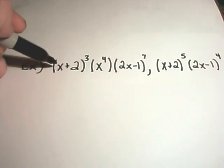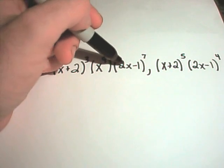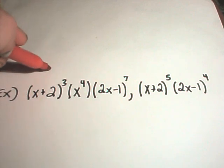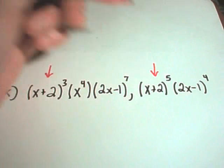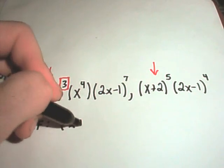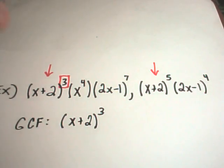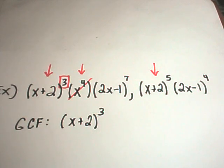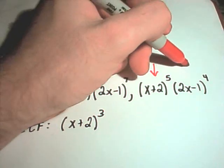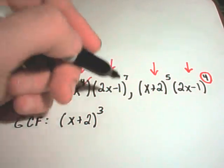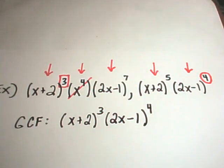Now you have things in parentheses, but it's the same idea. You've got (x+2)³ · x⁴ · (2x-1)⁷ and (x+2)² · (2x-1)⁴. I see (x+2) in both — the smallest exponent is 3, so I pull out (x+2)³. I see x raised to a power in the first part, but there's no plain x in the second part, so I can't pull out any x's. I see (2x-1) in both — the powers are 7 and 4, so I pull out (2x-1)⁴. The greatest common factor is (x+2)³ times (2x-1)⁴.